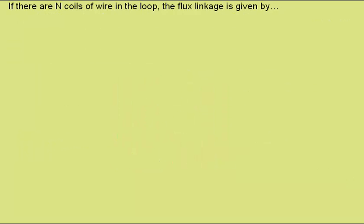If there are N coils of wire in the loop, each coil effectively acts as a separate loop, and so what is called the flux linkage is given by this expression. The number of turns times the magnetic flux is equal to the magnetic flux density, multiplied by the area, multiplied by the number of turns, multiplied by the cosine of the angle between the loop and the field.